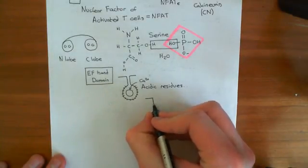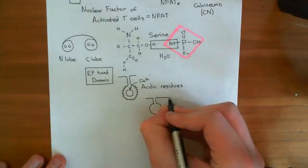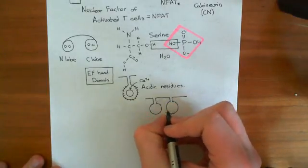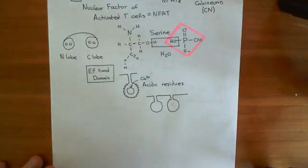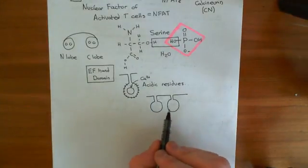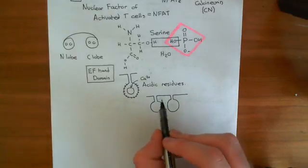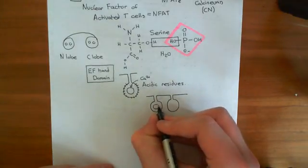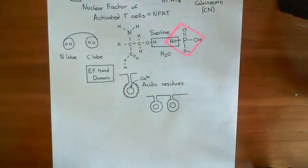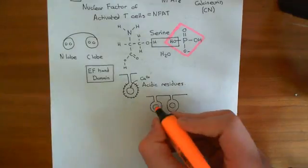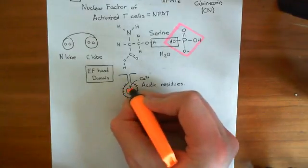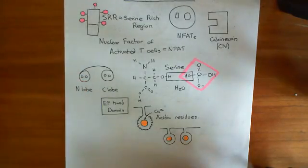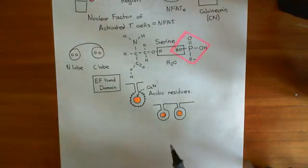EF-hands are often found in dimers — you'll have one EF-hand, and next to it another EF-hand. This is what you have in the lobes of calmodulin: two EF-hands dimerised together with a linker region between the two EF-hand domains. A calcium ion can bind to one EF-hand and another calcium ion to the other, so two calcium ions overall bind to the EF-hand dimer. That accounts for the two calcium binding sites in each lobe.